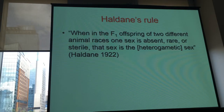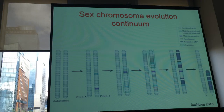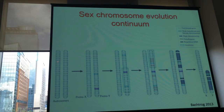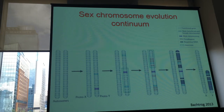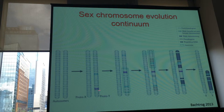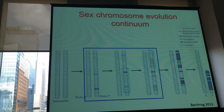This rule implies that the taxa have sex chromosomes, which is not always the case. There's a whole continuum of sex chromosome evolution where some species don't have sex chromosomes and sex is determined by multiple genes in different chromosomes or by the environment. Then you evolve young sex chromosomes that are very similar to each other — homomorphic — and you go all the way to very heteromorphic sex chromosomes. For the next couple of slides I'm going to consider this middle part as homomorphic sex chromosomes, and the other end as heteromorphic sex chromosomes.